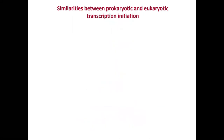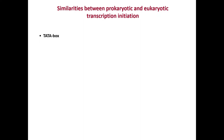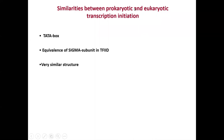Let us start with the similarities between prokaryotic and eukaryotic transcription initiation. Both have a TATA box-like feature — a promoter element rich in T's and A's, where the RNA polymerase is recruited. Both have a sigma subunit-like feature. In prokaryotic transcription, the sigma subunit is considered part of RNA polymerase, though it is a metastable association — meaning the sigma subunit remains associated with RNA polymerase only during initiation, and during elongation it is not part of it.